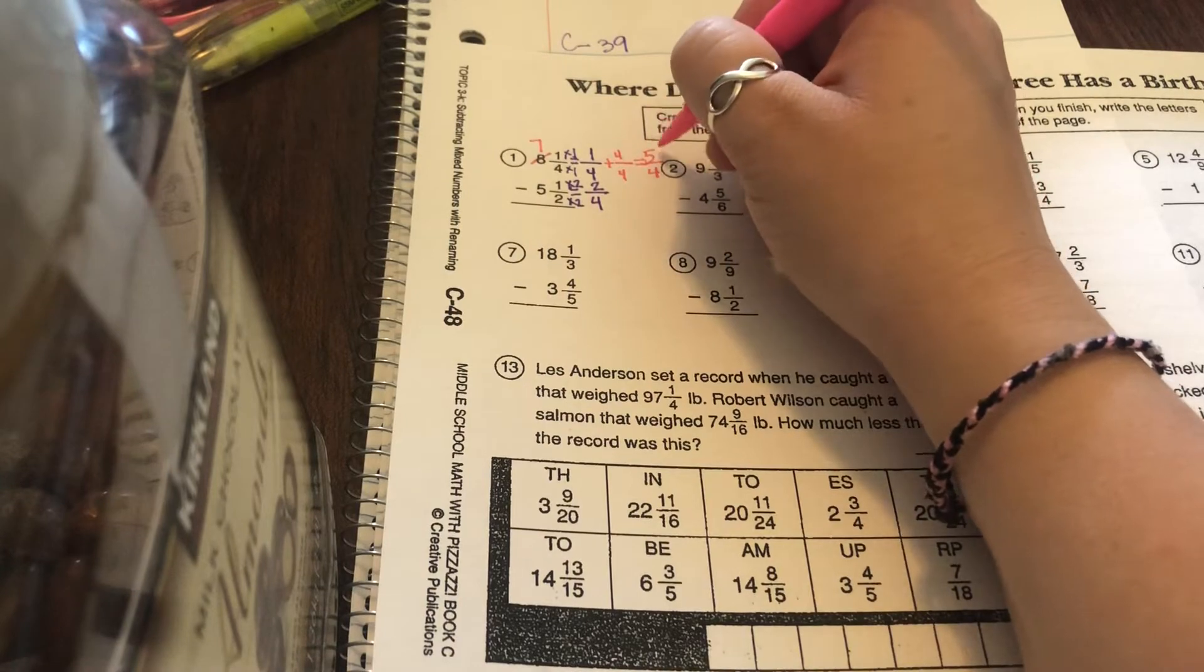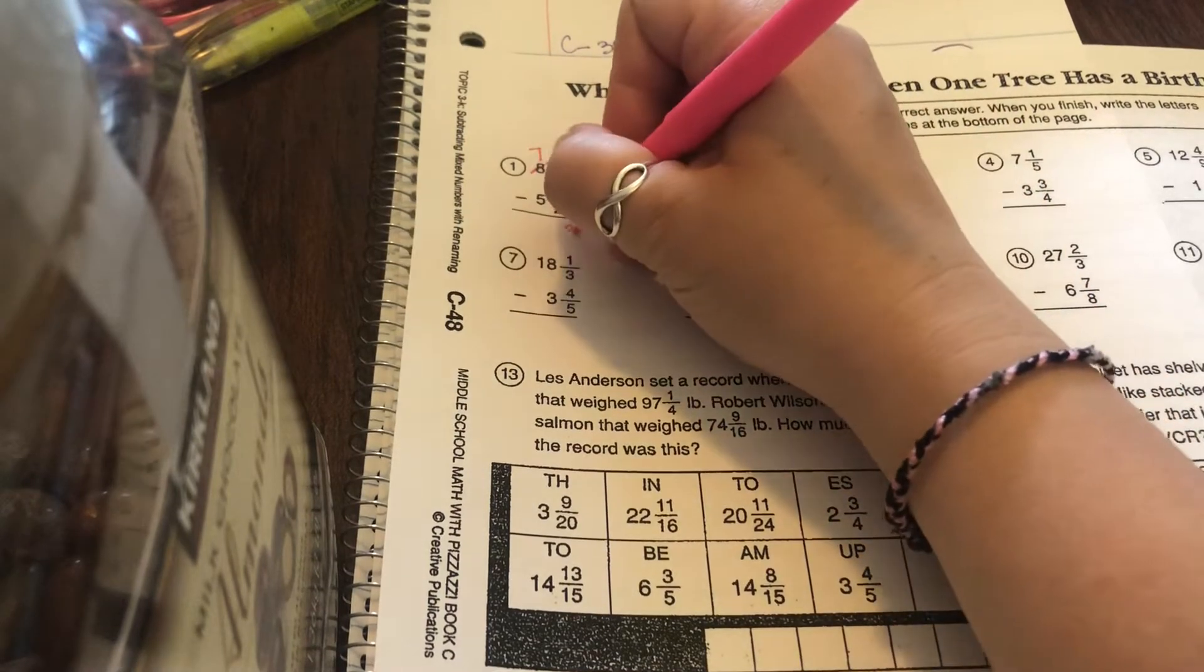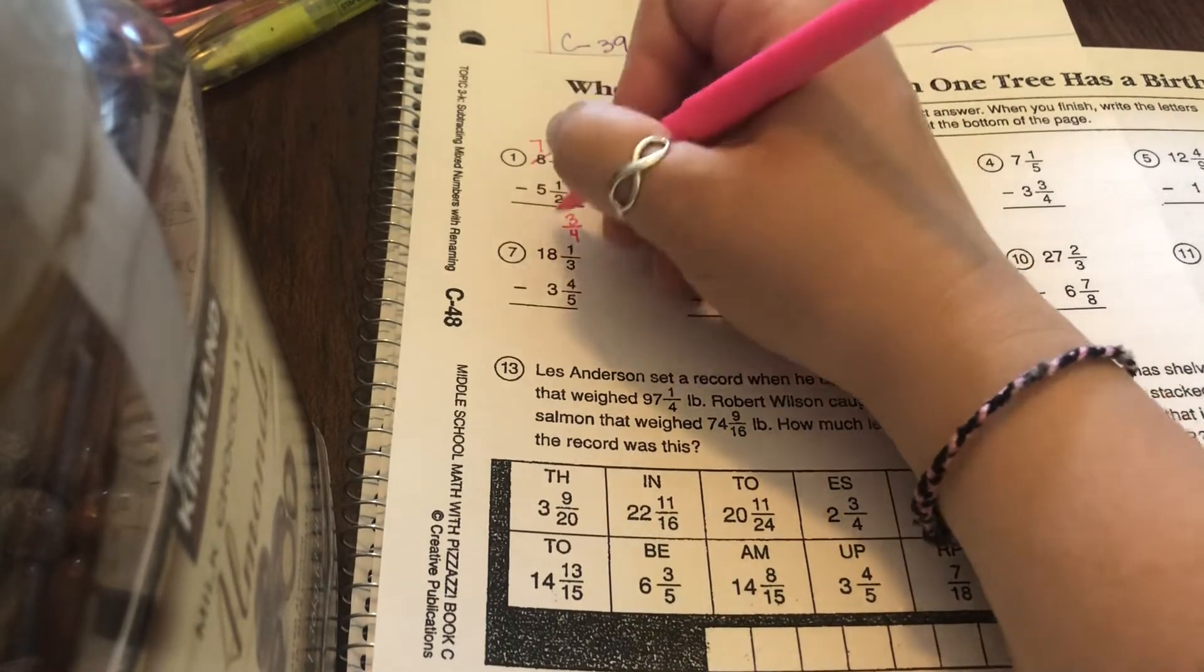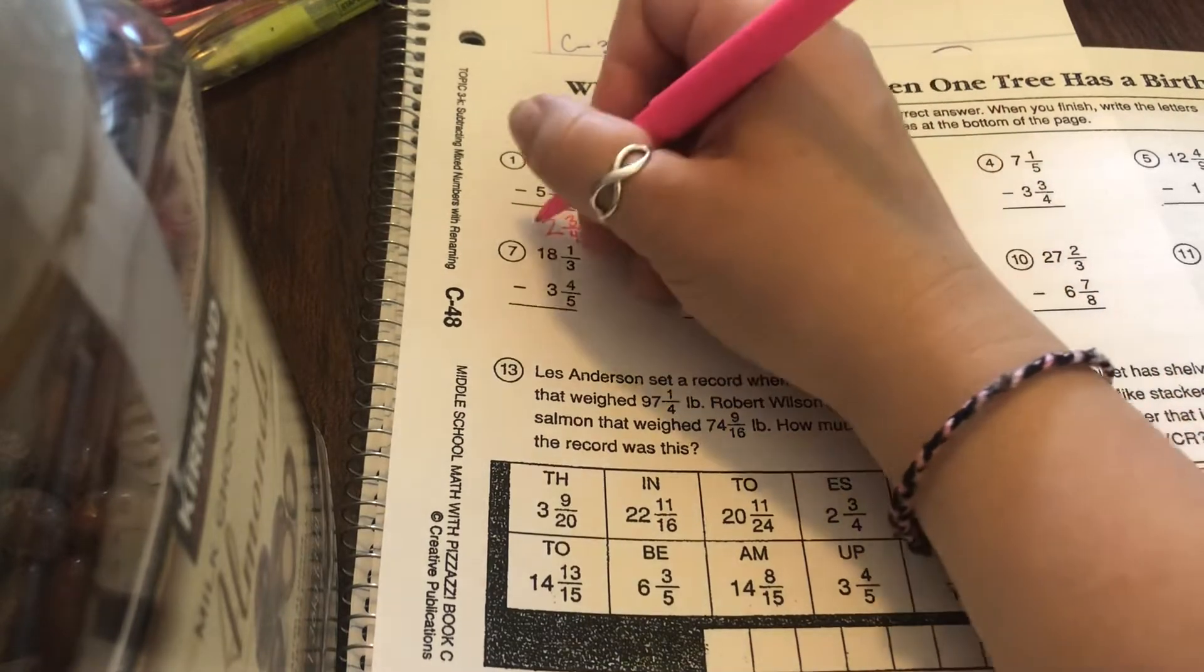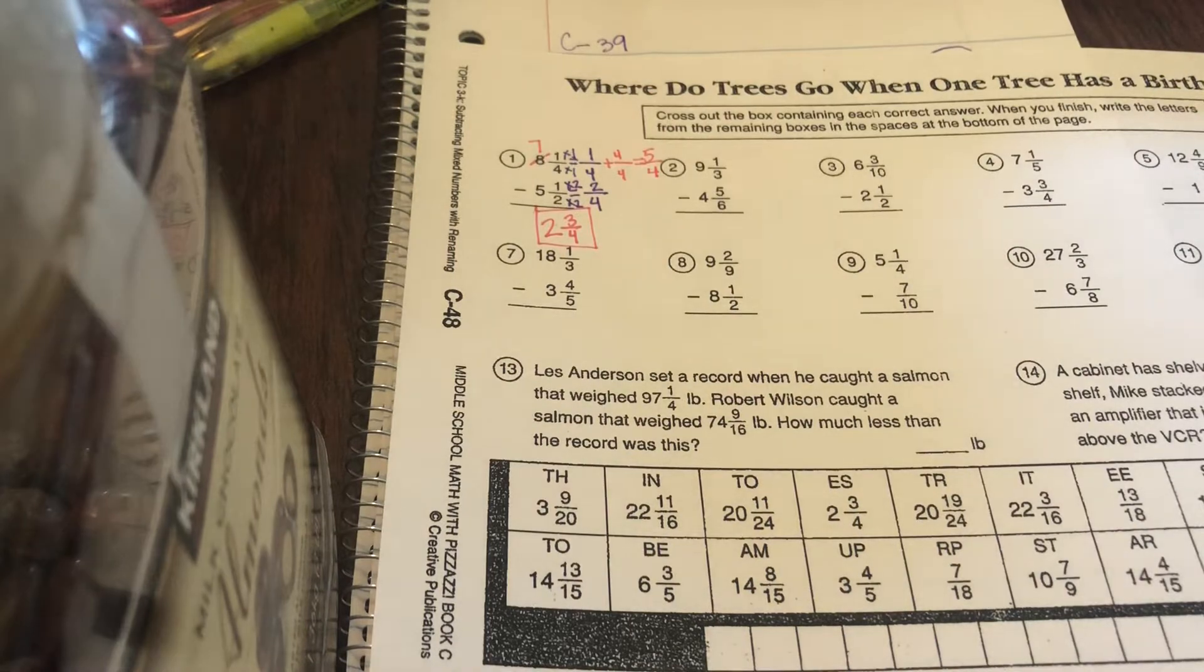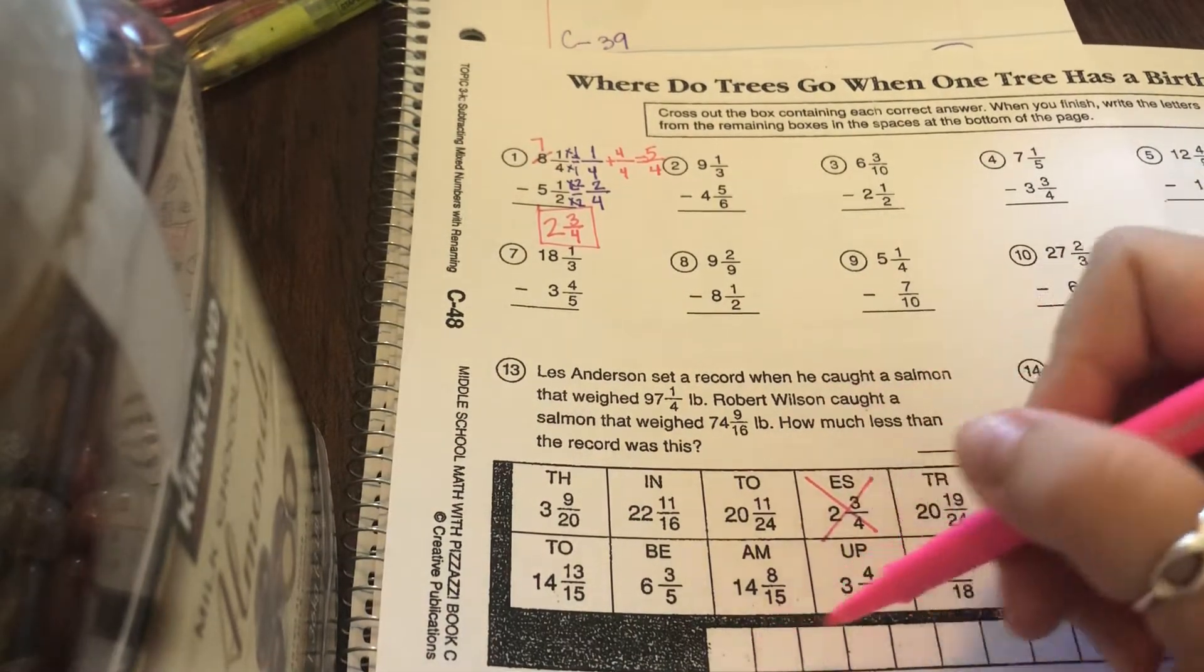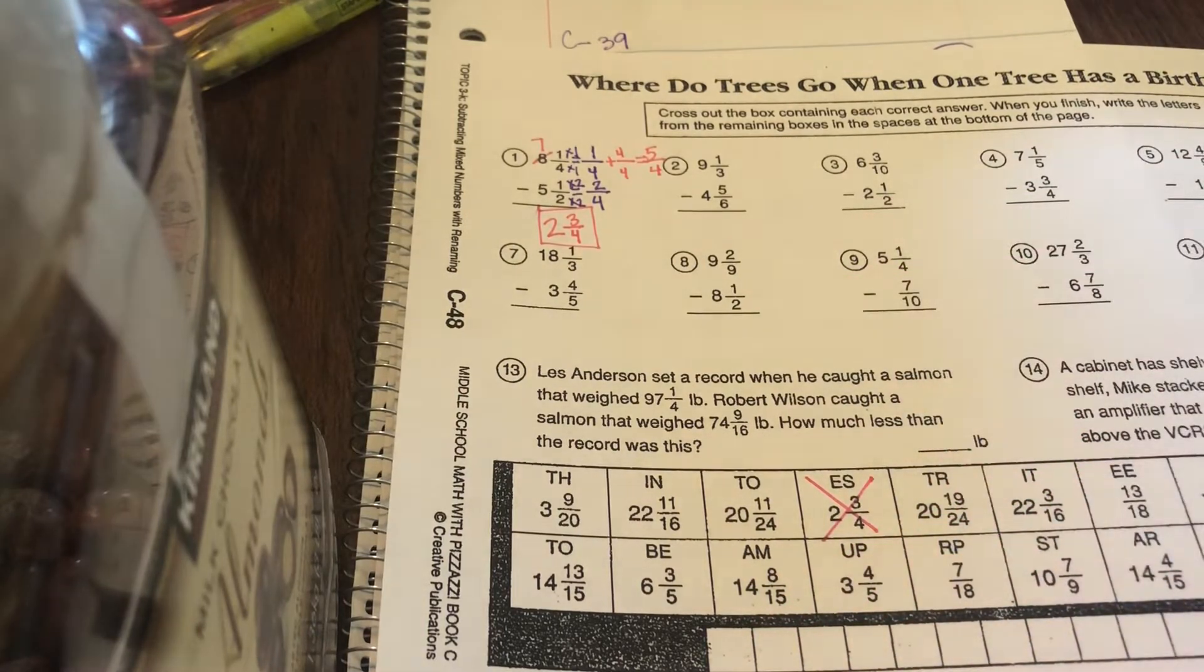Now you have a big enough numerator, 5, to take away 2 from. 5 minus 2 is 3. Keep the denominator the same. And 7 minus 5 is 2. It can't reduce, and it's not improper, so you're done. So you're going to find 2 and 3 fourths along the bottom and cross it off. Notice how I didn't write it yet, because you're only going to write whatever's left after you're done with all the problems.